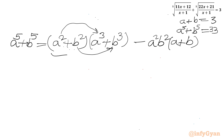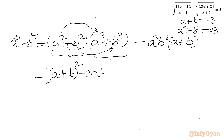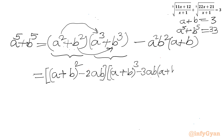Further, I can express a² plus b² as (a plus b)² minus 2ab, and a³ plus b³ as (a plus b)³ minus 3ab(a plus b). Then we have minus a²b² times (a plus b). Now we need to plug in the values.